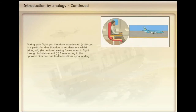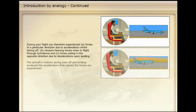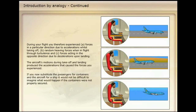During your flight, you therefore experienced: (a) forces in a particular direction due to accelerations while taking off; (b) random heaving forces when in flight through turbulence; and (c) forces acting in the opposite direction due to decelerations upon landing. The aircraft's motions during take-off and landing produce the accelerations that cause the forces you experienced. If you now substitute the passengers for containers and the aircraft for a ship, it would not be difficult to imagine what would happen if the containers were not properly secured.